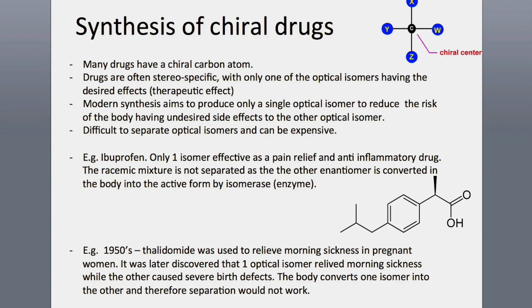Another very famous example is thalidomide, which was used in the 1950s and was prescribed to pregnant women who were suffering from morning sickness. However, it was later discovered that one optical isomer relieved the morning sickness symptoms, while the other one caused very severe and horrific birth defects. When you take the medication, the body converts one isomer into the other, and in this case, separating the two isomers would not work.